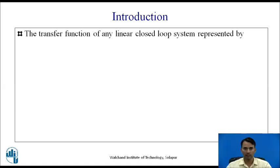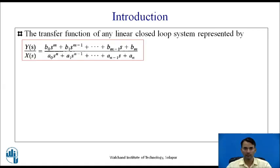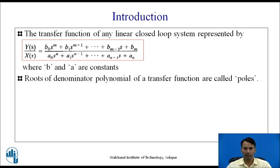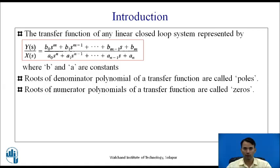The transfer function of any linear closed loop system is represented by y(s) divided by x(s), equal to b0*s^m + b1*s^(m-1) + ... + b(m-1)*s + bm, divided by a0*s^n + a1*s^(n-1) + ... + a(n-1)*s + an, where b and a are constants. Roots of the denominator polynomial are called poles, whereas roots of the numerator polynomial are called zeros.